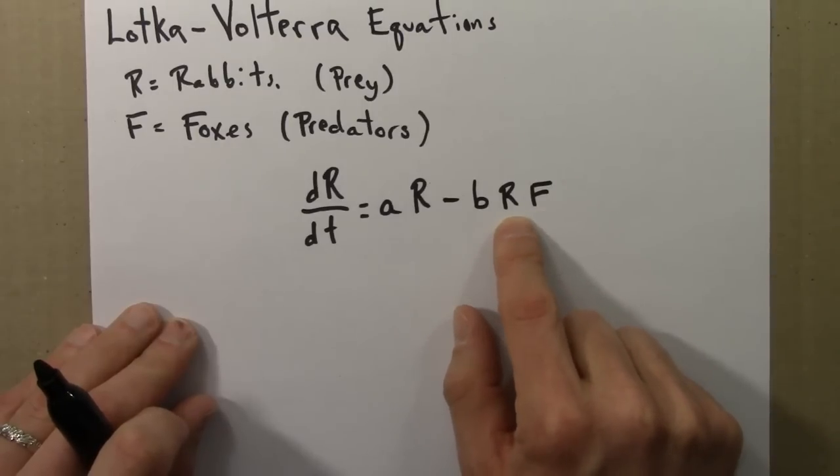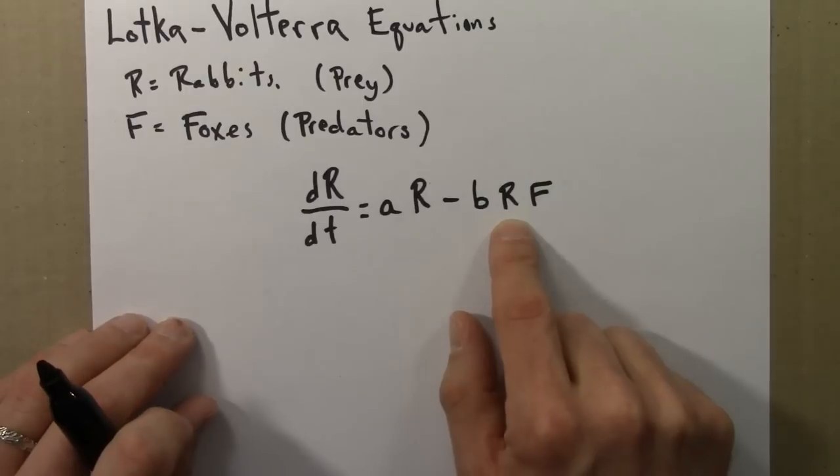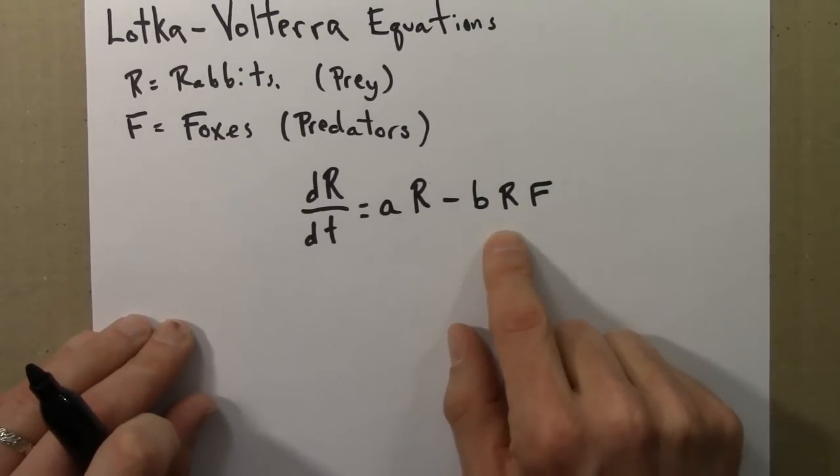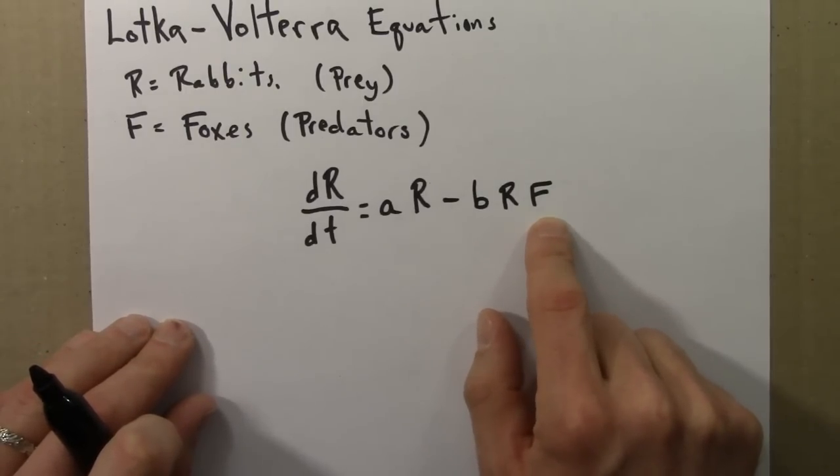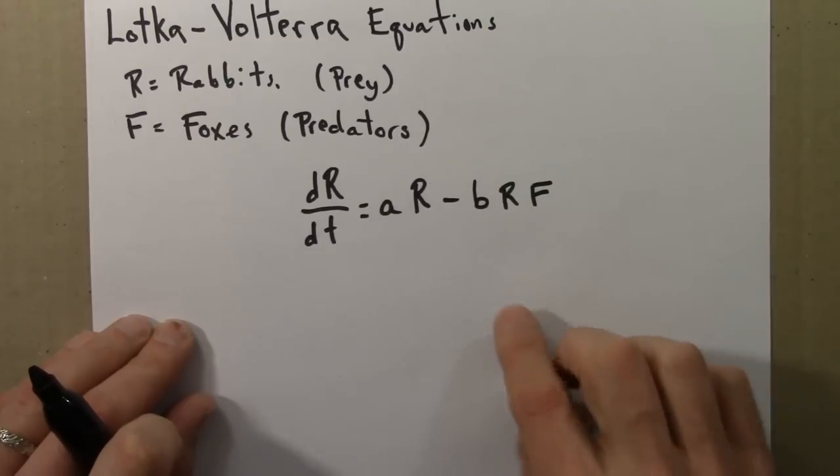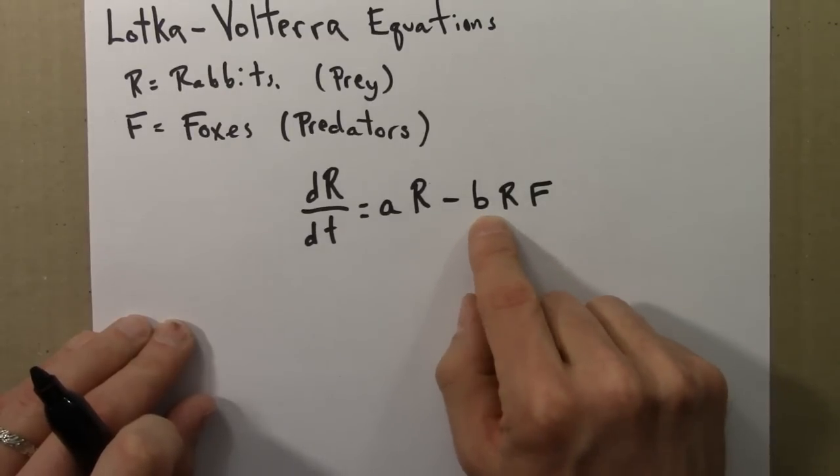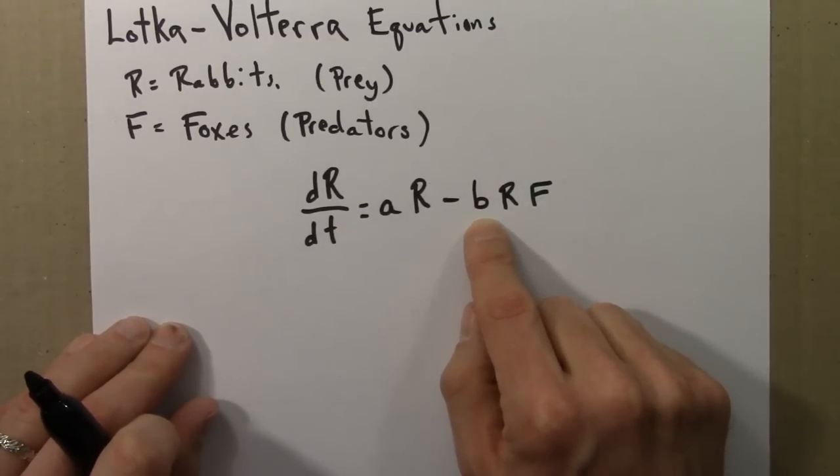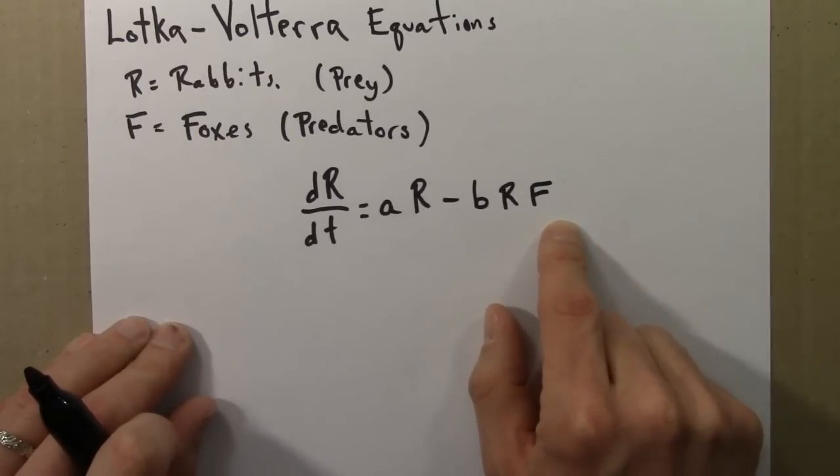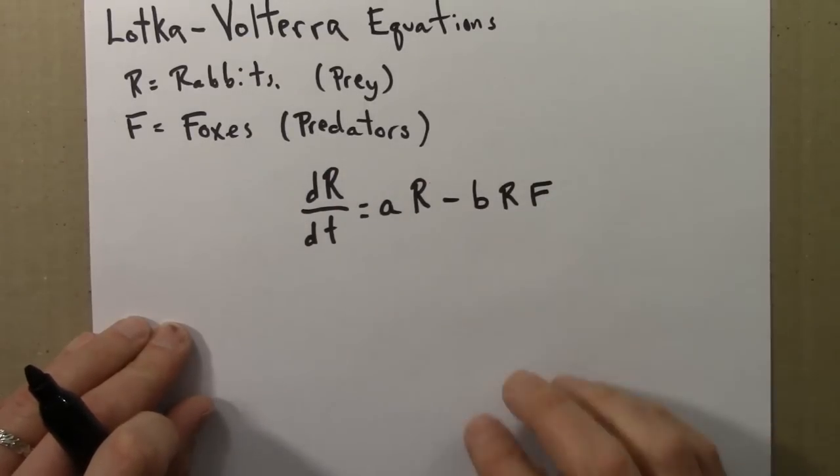So, separately, this term is linear in both R and F. If you double the number of rabbits, you double the number of rabbits that get eaten. That's what this says. If you double the number of foxes, you double the number of rabbits that get eaten. And then B is some parameter that can be some measure of the deadliness of foxes. So that's this term for the rabbits.